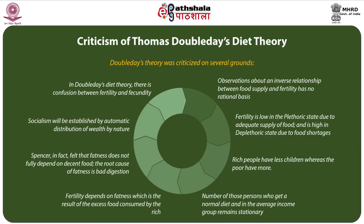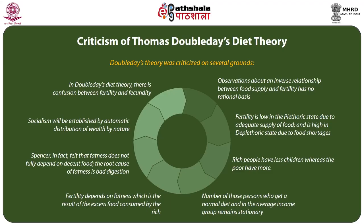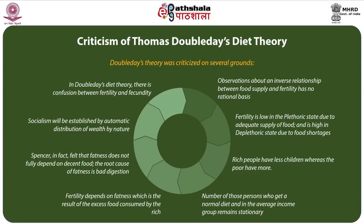There are criticisms of Thomas Doubleday's Diet Theory. Doubleday's theory was criticized on several grounds. His observations about an inverse relationship between food supply and fertility have no rational basis. According to Doubleday, fertility is low in the plethoric state due to adequate supply of food and high in the deplethoric state due to food shortages. However, such events have not been experienced in society. In fact, population rises even in the plethoric state.